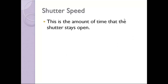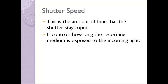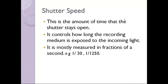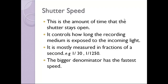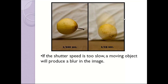Shutter speed. This is the amount of time that the shutter stays open. It controls how long the recording medium is exposed to the incoming light. It is mostly measured in fractions of a second, for example, one-third of a second. The bigger the denominator, the faster the speed. If the shutter speed is too slow, a moving object will produce a blur in an image.